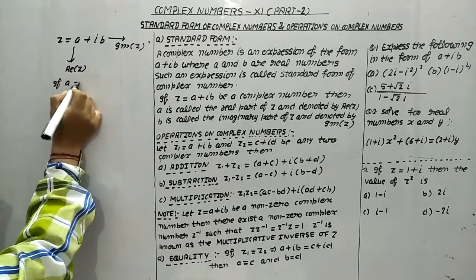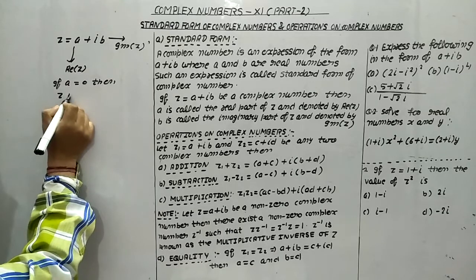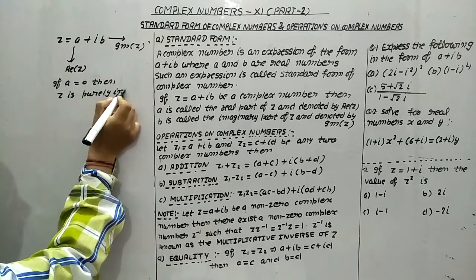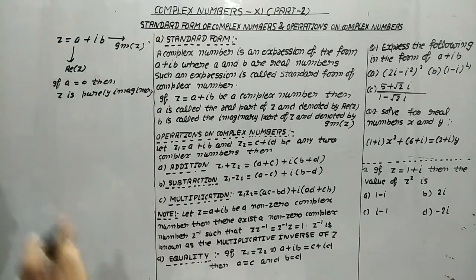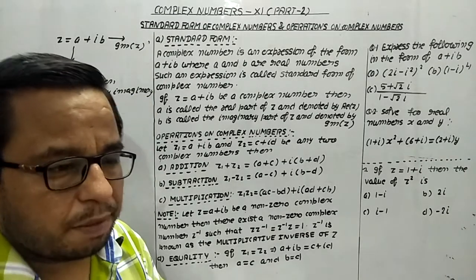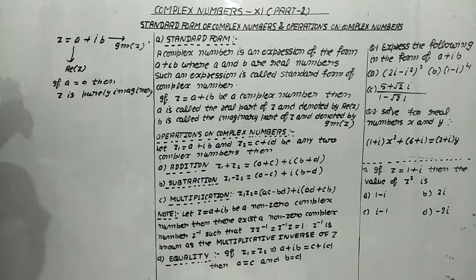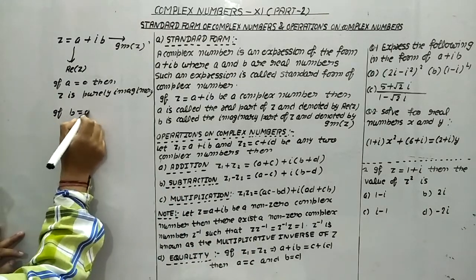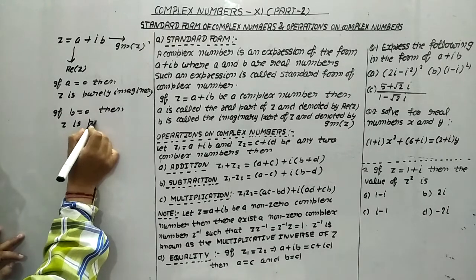Now, if a equals zero, then we say z is purely imaginary. So if we have to prove that z is purely imaginary, we have to prove the real part is zero — that means we will show a equals zero. And if b equals zero, then z is known as purely real.